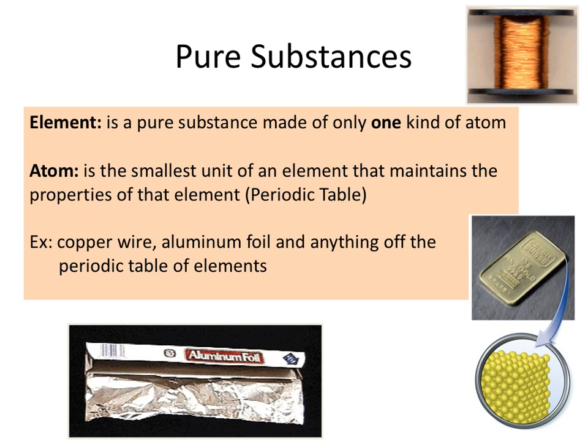Some examples of things made up of elements are copper wire, aluminum foil, and gold — basically a lot of things you might see in your cabinets at home or in the garage.